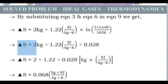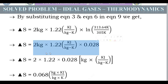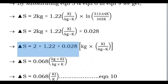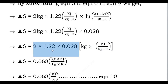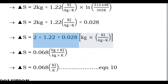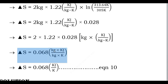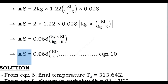So ΔS = 2 × 1.22 × 0.028 × kg × kJ/kg·K. Here 2 × 1.22 × 0.028 = 0.068, and kg × kJ/kg·K simplifies to kJ/K (kg cancels). Therefore ΔS = 0.068 kJ/K. Consider this as Equation 10.